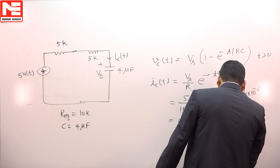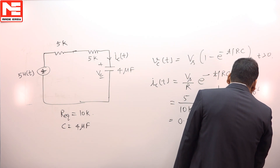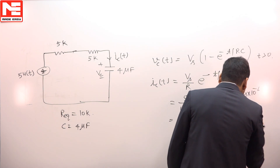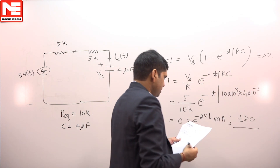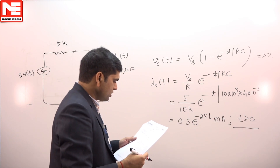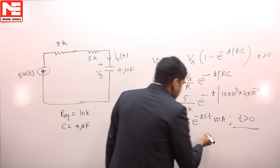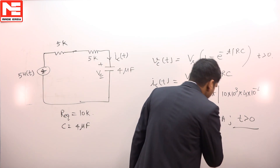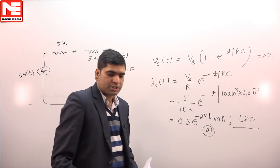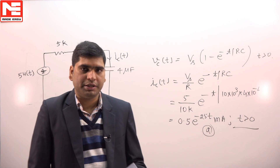This gives 0.5e^(−25T) milliamperes for T greater than 0, which is given in option A. So the right choice for this question is option D. Thank you.